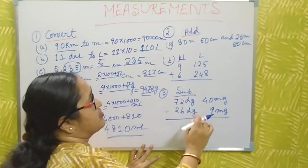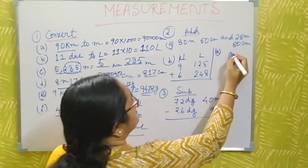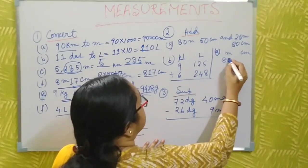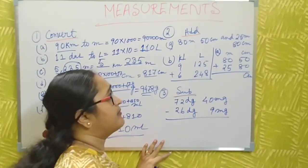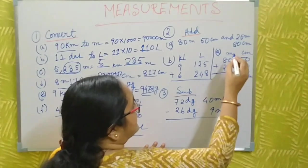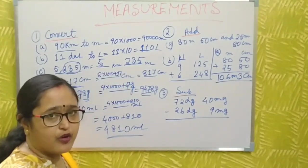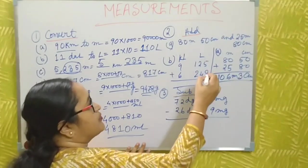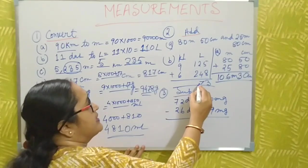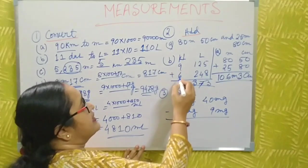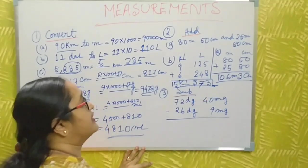Now I will discuss addition and subtraction of measurements. For addition, write the values in columns for meter and centimeter — for example, 80m 50cm plus 25m 80cm. Do normal column addition: 50 + 80 = 130, write 30 carry 1; then the meters column. Similarly for kiloliter and liter columns — 8 + 5 = 13, carry 1, and so on.